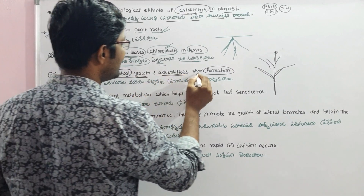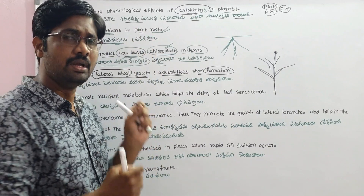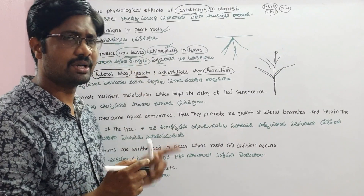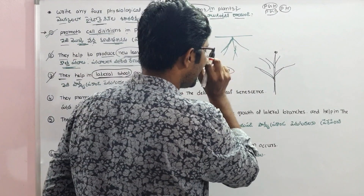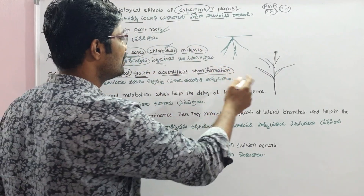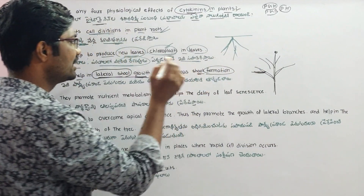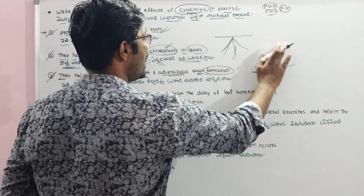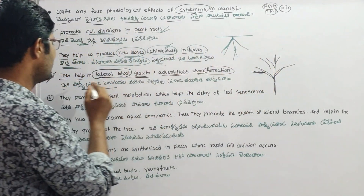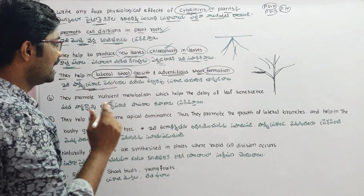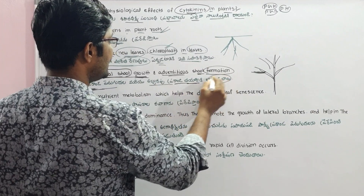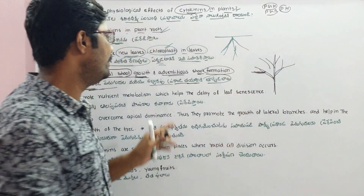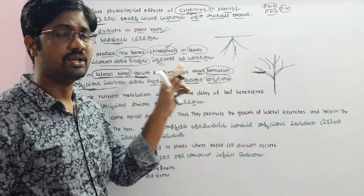The next effect is adventitious shoot formation. Cytokinins promote adventitious shoot formation, meaning new shoots can form from unusual positions on the plant. This adventitious shoot formation is how new branches develop in certain conditions.